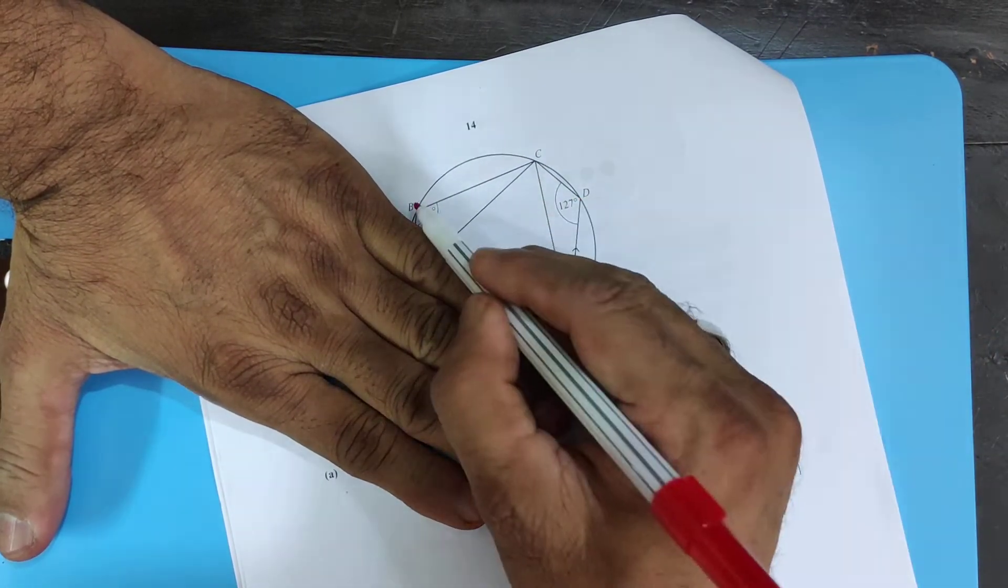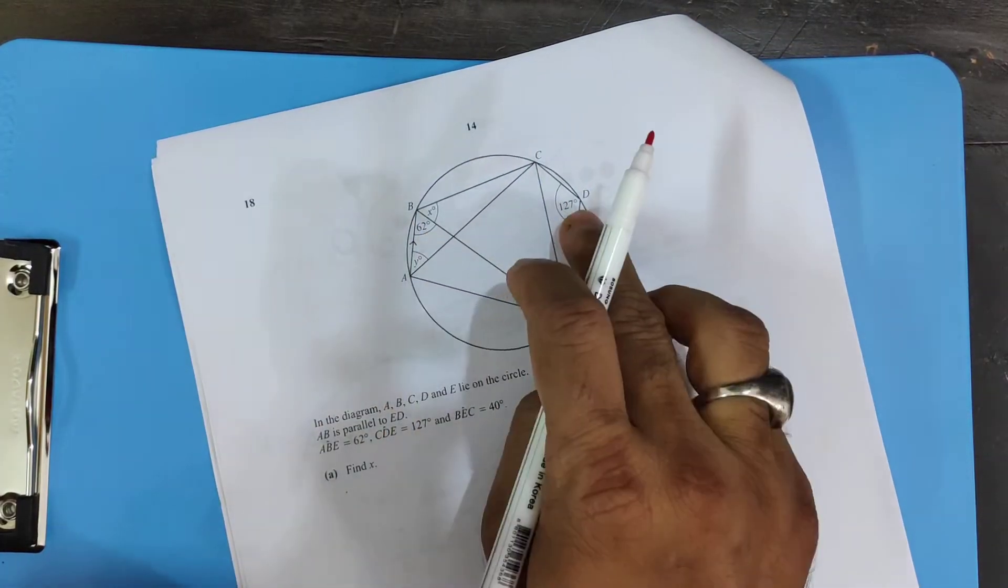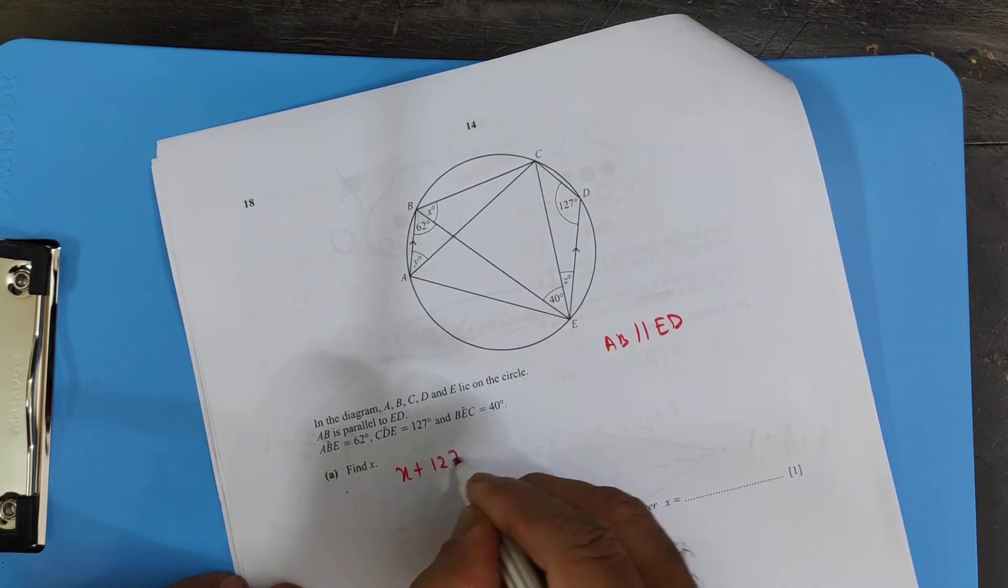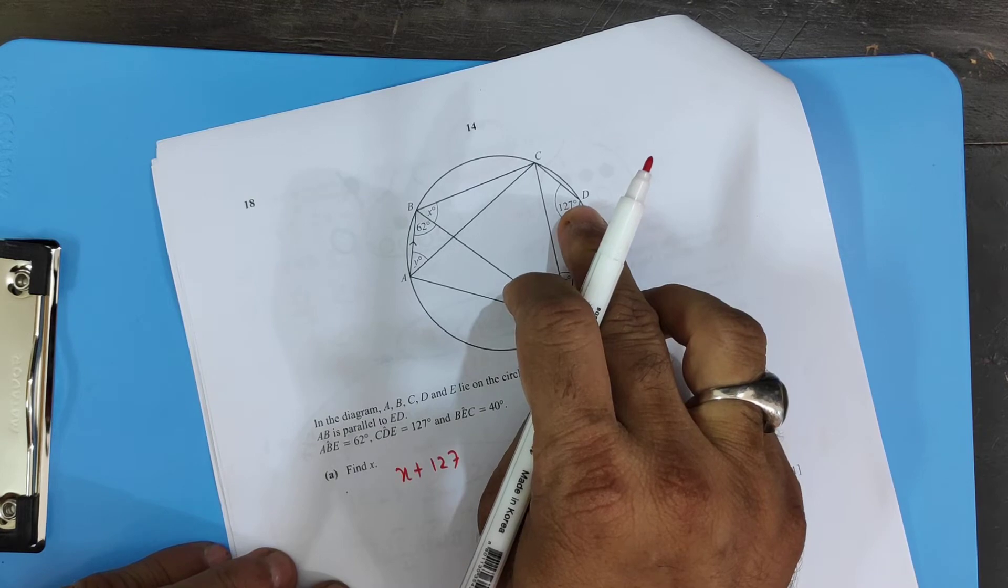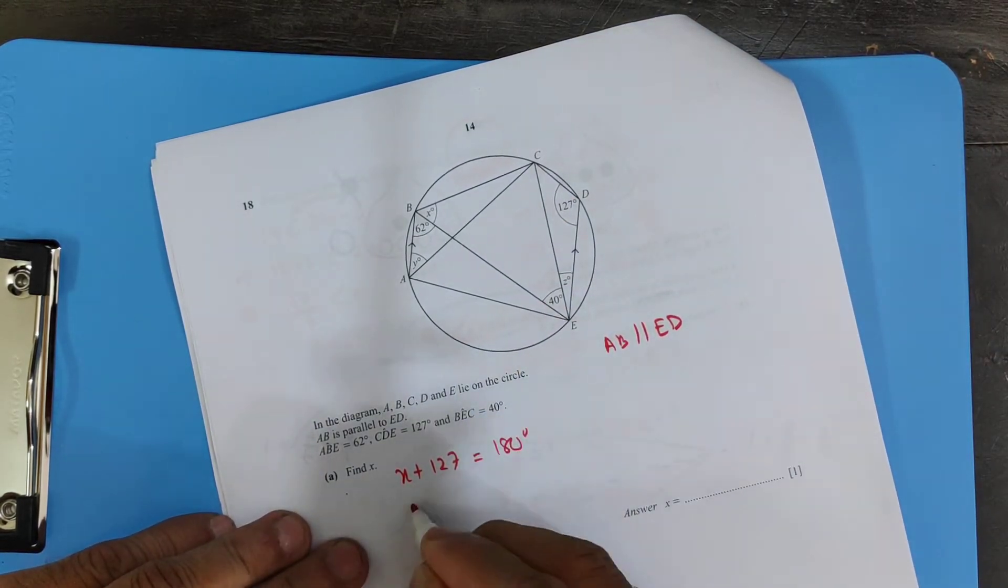X plus 127, the opposite angles of cyclic quadrilateral are supplementary, so that's supposed to be 180 degrees. So x equals 180 minus 127.